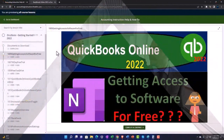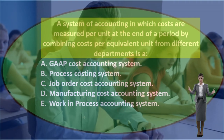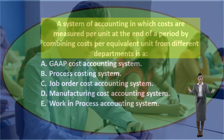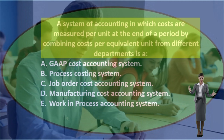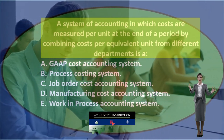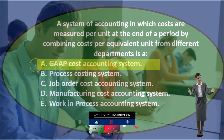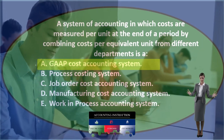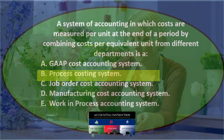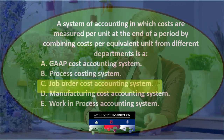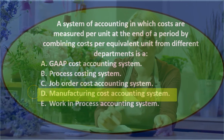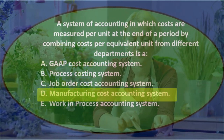First question: a system of accounting in which costs are measured per unit at the end of a period by combining costs per equivalent unit from different departments is: A) a GAAP generally accepted accounting principles cost accounting system, B) process costing system, C) job order cost accounting system, D) manufacturing cost accounting system, or E) work in process accounting system.